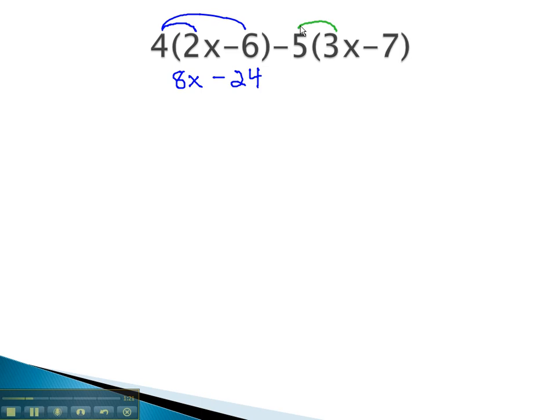On the second part, when we distribute, we need to be very careful of what we're distributing. A common error students make is they only distribute 5. But remember, this means the opposite of 5, subtract 5, and also negative 5 all at the same time. We are actually distributing negative 5. Negative 5 times 3x is negative 15, and negative 5 times negative 7 is positive 35.